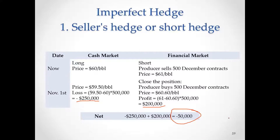The net result is minus $50,000. So in this hedging strategy we ended up losing $50,000. Hedging is still efficient — it didn't eliminate the entire loss, but this minus $50,000 is far less than minus $250,000. Under this hedge we still lost some money, but this is far less compared to being unhedged.